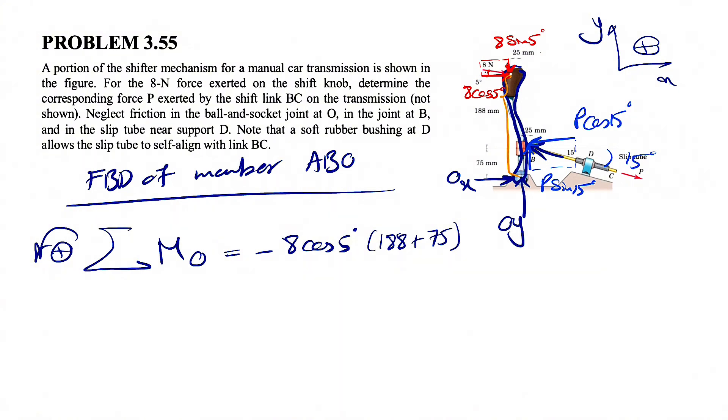And the moment of the vertical component, since a little bit to the left of the point O, 25 millimeter, it's going to rotate around this direction. So that's actually counterclockwise, 8 sine of 5 degrees. And the distance would be 25. That's pretty much everything for that one.